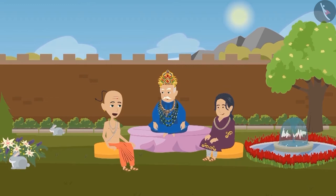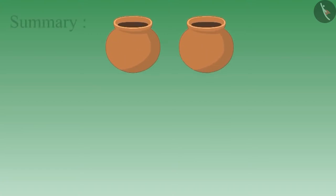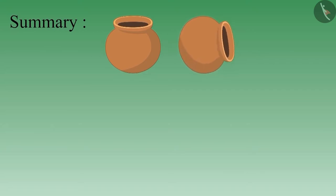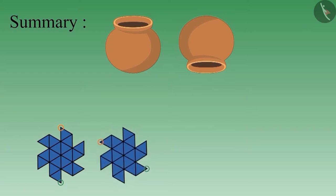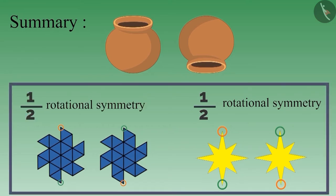Tenali Raman then asked: now you know a lot about rotation — can you tell about an image that, on rotating by one-fourth, looks the same as before? The king was puzzled. We will share the answer in the next video. In this video we learned about objects and images which do not change when rotated by half — these have half rotational symmetry, that is 1/2 rotational symmetry. Why don't you try to rotate such objects around you and observe? Thank you!